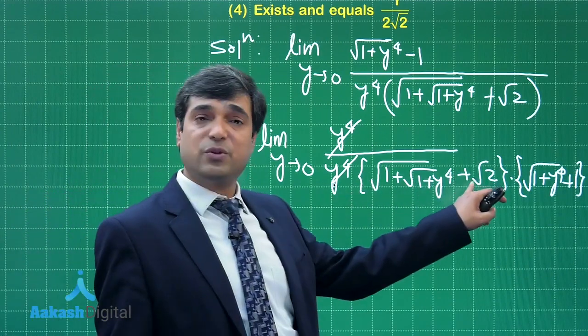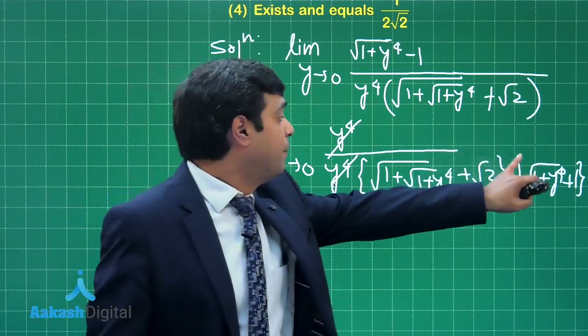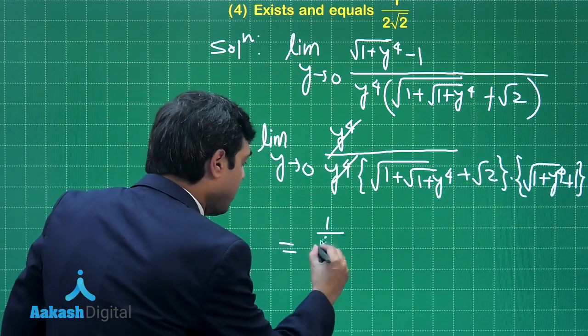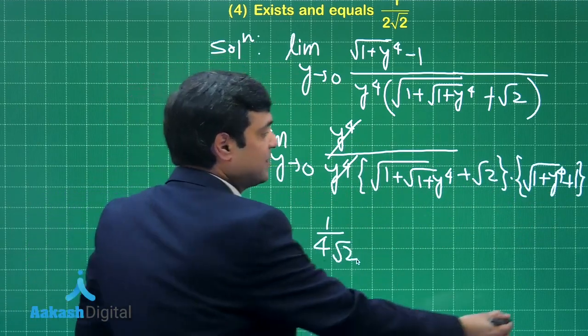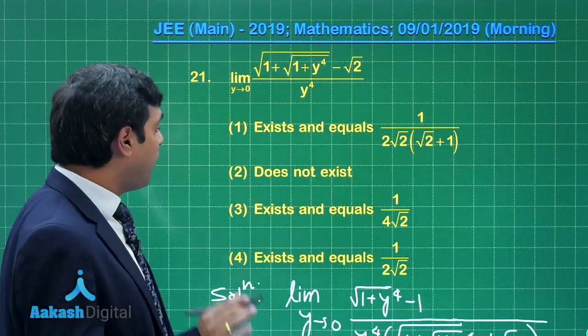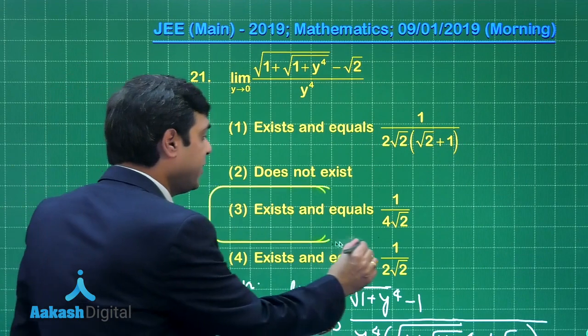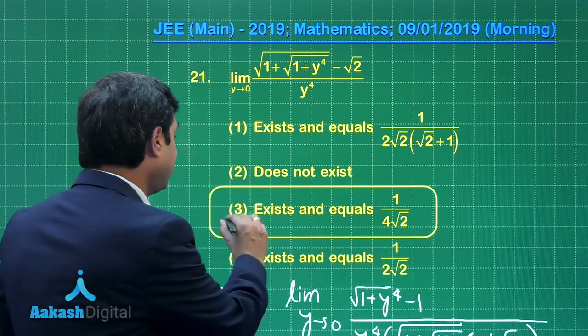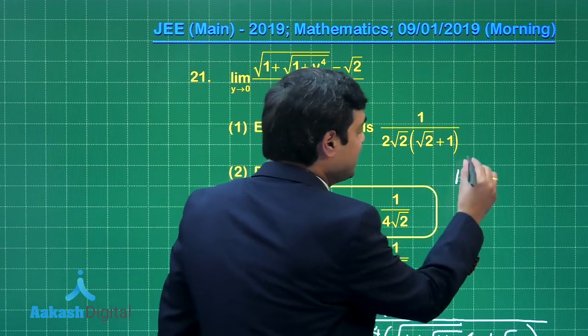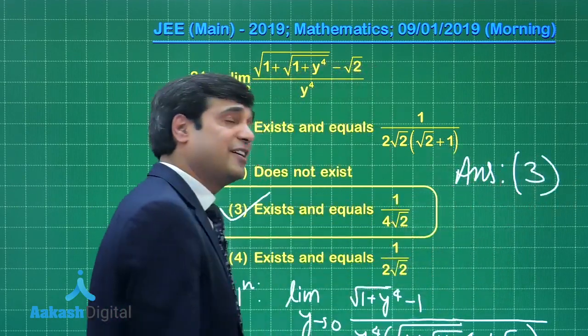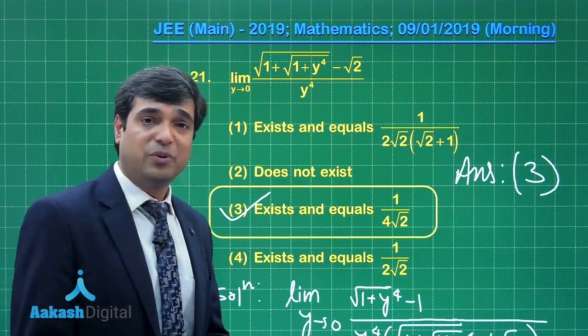Just apply the limit as y is approaching to 0 after cancelling y⁴ in numerator and denominator. What we get: √2 + √2, that is 2√2 multiplied with 2 in denominator. So it is 1/(4√2) as the final result. Let us see whether it is available there in options. 1/(4√2), yes it is available as option number 3. So the limit of the given function exists and it is equal to 1/(4√2). Correct answer is option number 3. Let us move on to the next one.